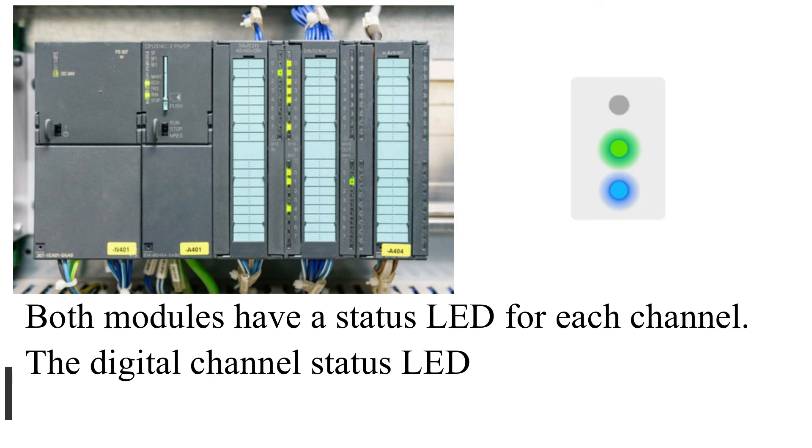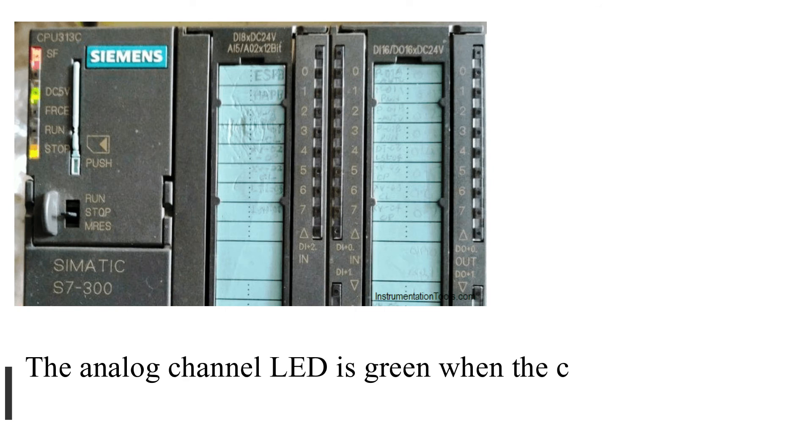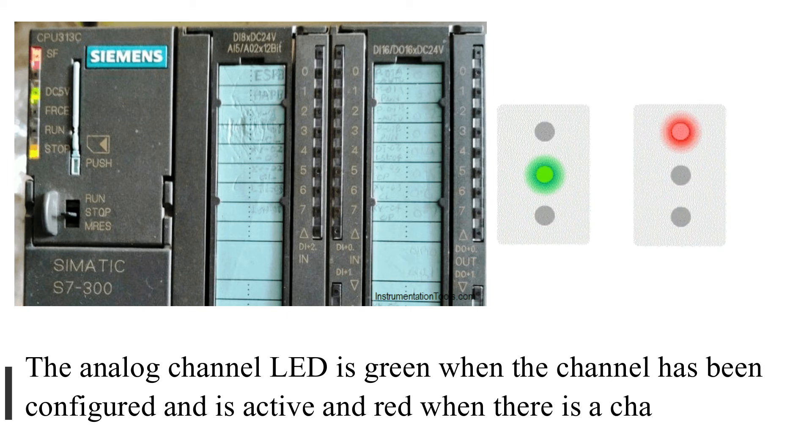The digital channel status LED is green and turns on when the input or output is on. The analog channel LED is green when the channel has been configured and is active, and red when there is a channel error.